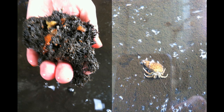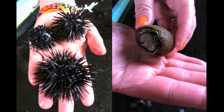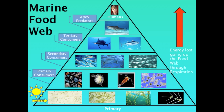There are hydrozoans and a crab, urchins, another hermit crab, sea star, mussels, clam, and urchin. This is the digital version of the marine food web pyramid. The only exception here is that we have humans at the top of the pyramid, and then the apex predators, tertiary consumers, secondary consumers, primary consumers, and primary producers. On the right, we note that energy is lost going up the food web through respiration.